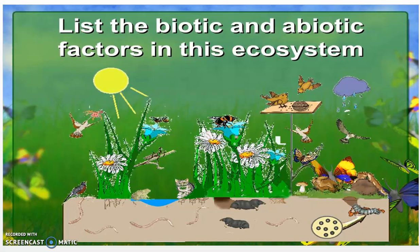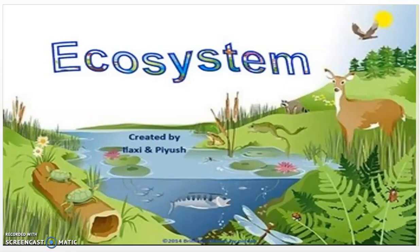Let's look at one more ecosystem here. I want you to make another t-chart and list the biotic or living factors and the abiotic or non-living factors in this ecosystem. We're not going to go through all of these on this one — I just wanted you to make a chart. After doing this three times, you should be comfortable with being able to recognize the biotic and abiotic factors in an ecosystem. I hope this lesson on ecosystems and the things that influence it has helped you understand the difference between biotic and abiotic factors.